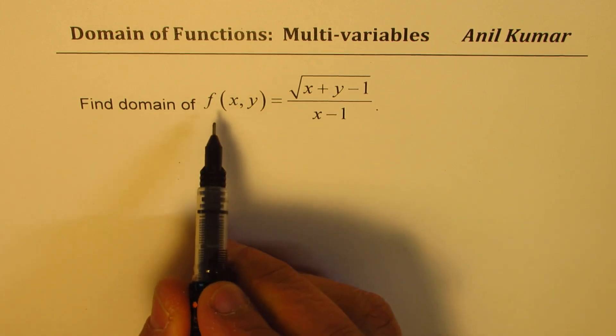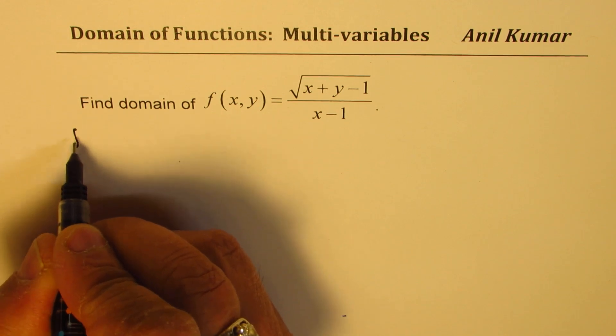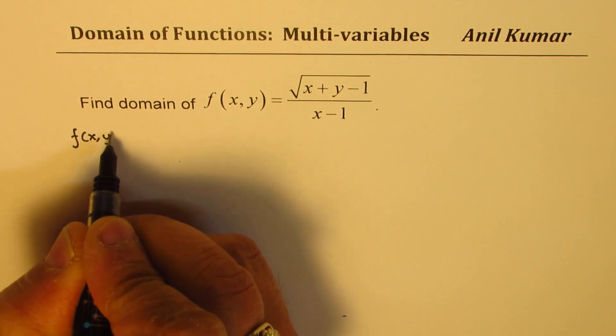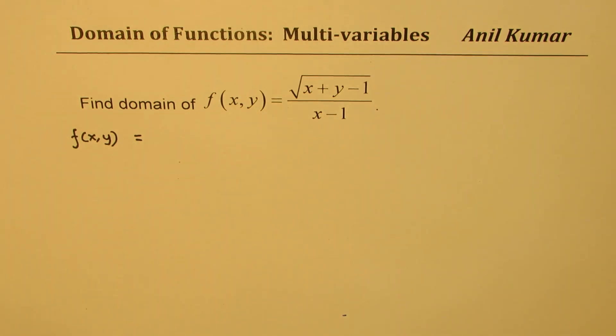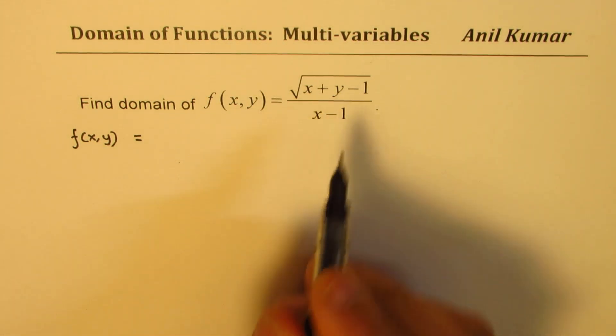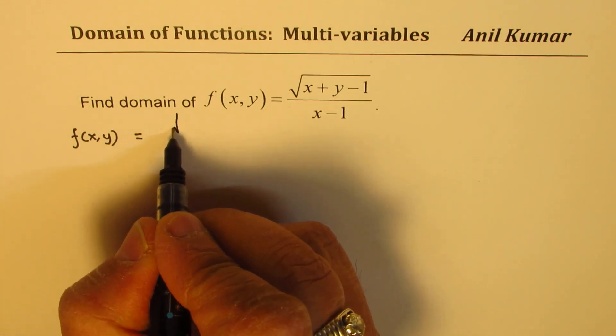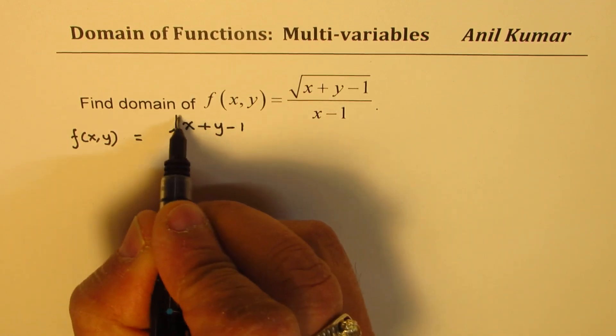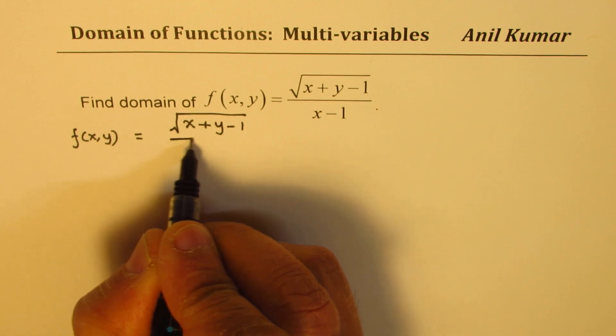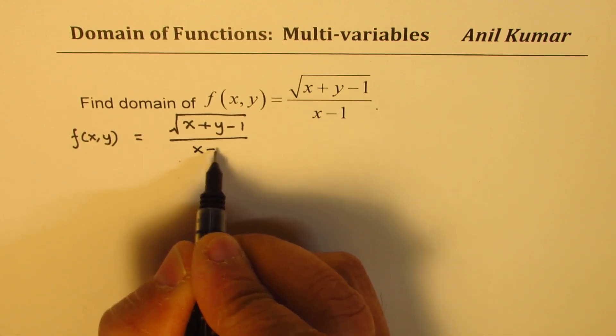Now we are saying that the function f of x and y, it means it is function of both the variables x and y. Now even when we write down y equals to mx plus b, it is two variables. Think in the same fashion. So that should not be difficult now. So we have square root of x plus y minus 1 in the numerator and the denominator is x minus 1.